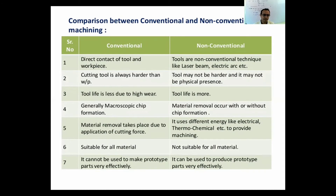The next difference is that in conventional machining, material removal takes place due to the application of cutting force — you have to apply high cutting force to achieve a high material removal rate. In non-conventional machining processes, different energy types are used such as electrical, thermochemical, thermal, and laser energy to provide machining. The material removal rate ultimately goes higher, which benefits both the customer and the producer. Manufacturing industries are using advanced technologies for machining different objects.